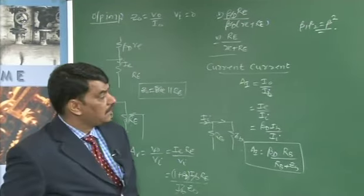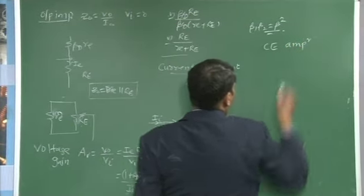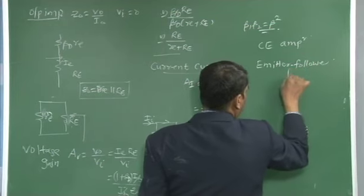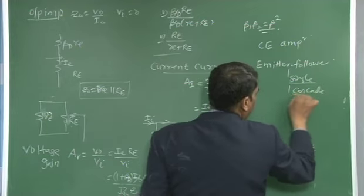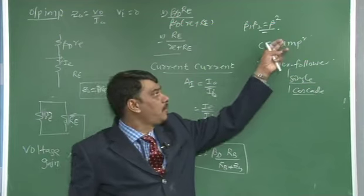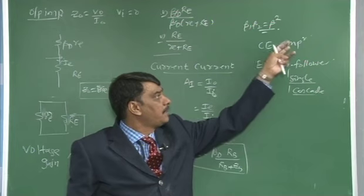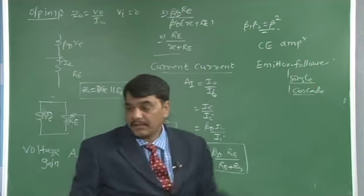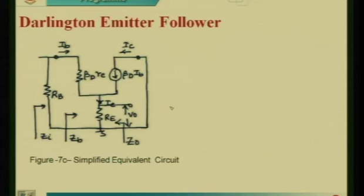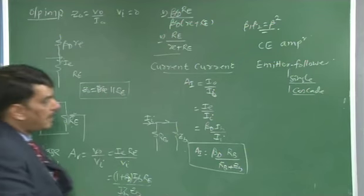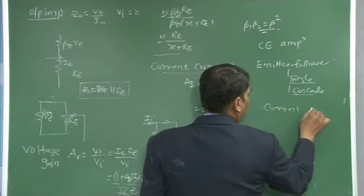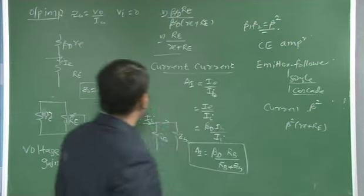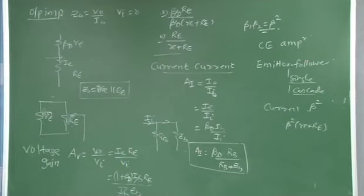In today's class, we discussed the common emitter amplifier and the emitter follower — single stage and Darlington cascade. In the emitter follower, due to resistance Re, the voltage gain decreases, input impedance increases, and output impedance decreases. In the Darlington cascade, the analysis is identical except the term beta_d replaces beta. With beta_d equal to beta squared, the current gain is the square of beta, input impedance is further increased by beta squared times (Re plus re), while voltage gain and output impedance remain the same. Thank you.